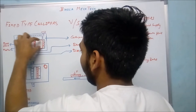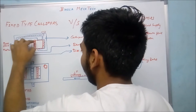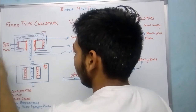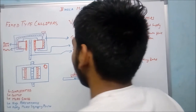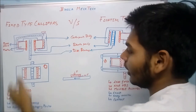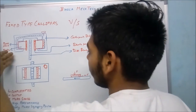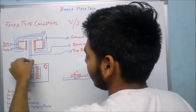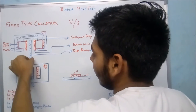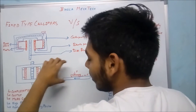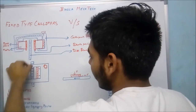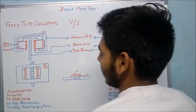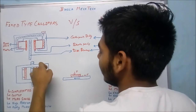This is the cavity for the brake piston to move and this is the brake disc — that is the complete diagram. Coming to the top view of this fixed type caliper: this is the caliper body, this is the disc brake, these are the pads, these are the pistons, and this is the inlet for the pressurized fluid.